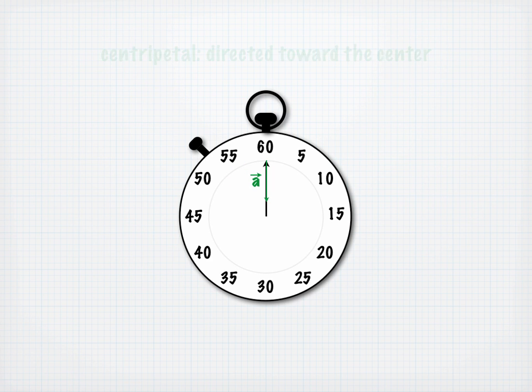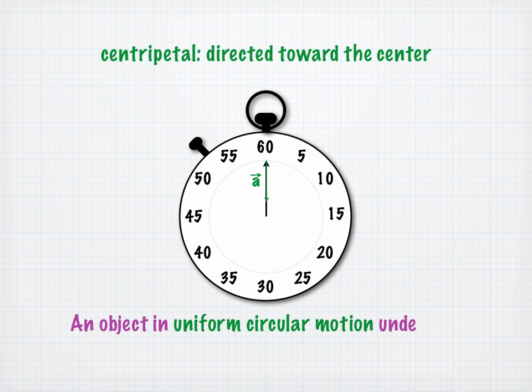The word centripetal means directed towards the center. Centripetal acceleration is characteristic of uniform circular motion, meaning that an object in uniform circular motion undergoes centripetal acceleration.